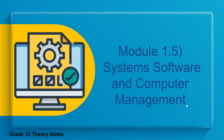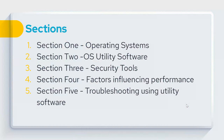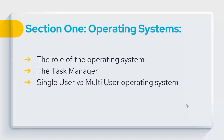Module 1.5 covers system software and computer management — these are grade 12 notes, but topics like these were introduced in grades 10 and 11, so we're building on prior knowledge. The five sections we'll cover are: operating systems, utility software, security tools, factors influencing performance, and troubleshooting using utility software. In section one, we'll look at the role of the operating system, the task manager, and single-user versus multi-user operating systems.